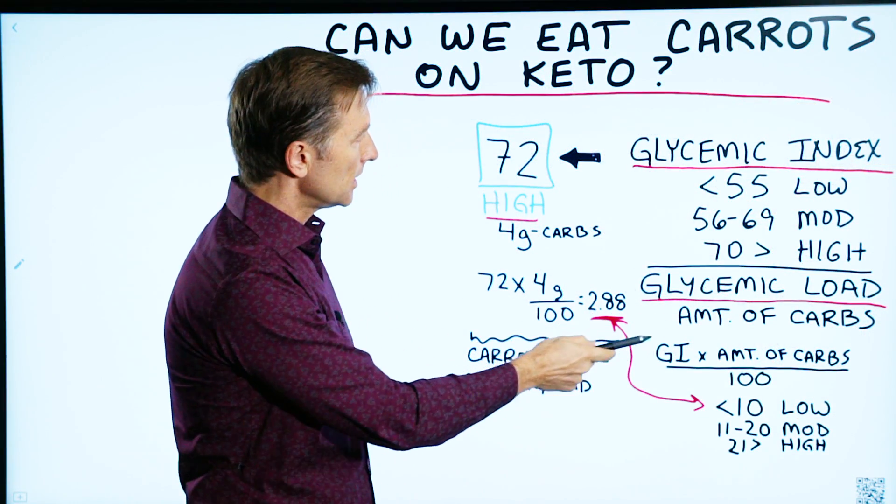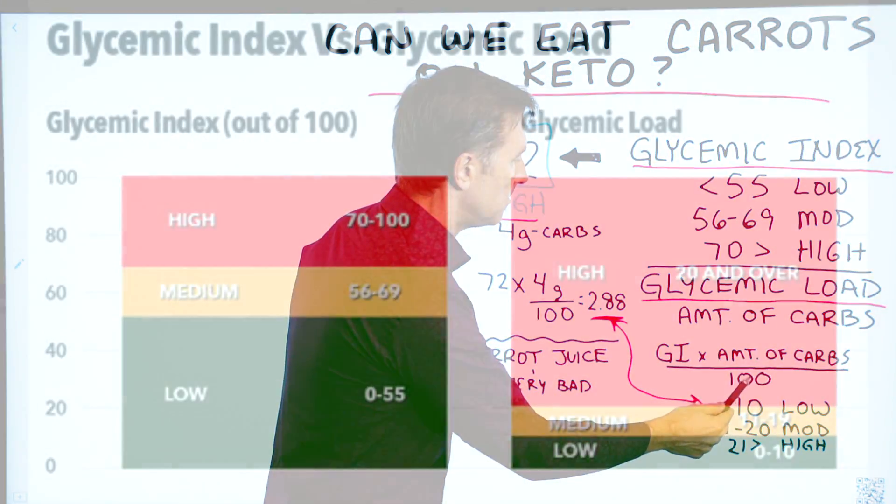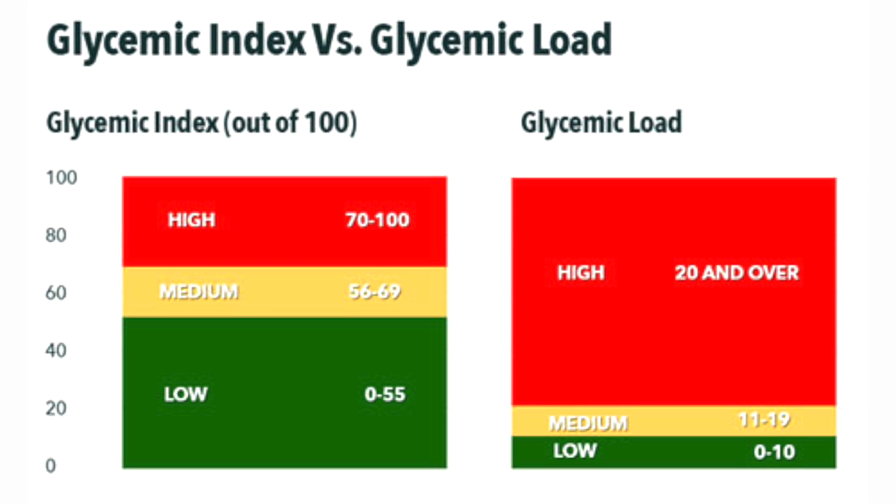The calculation is: glycemic index times the amount of carbs divided by 100. Less than 10 would be low, over 21 would be high.